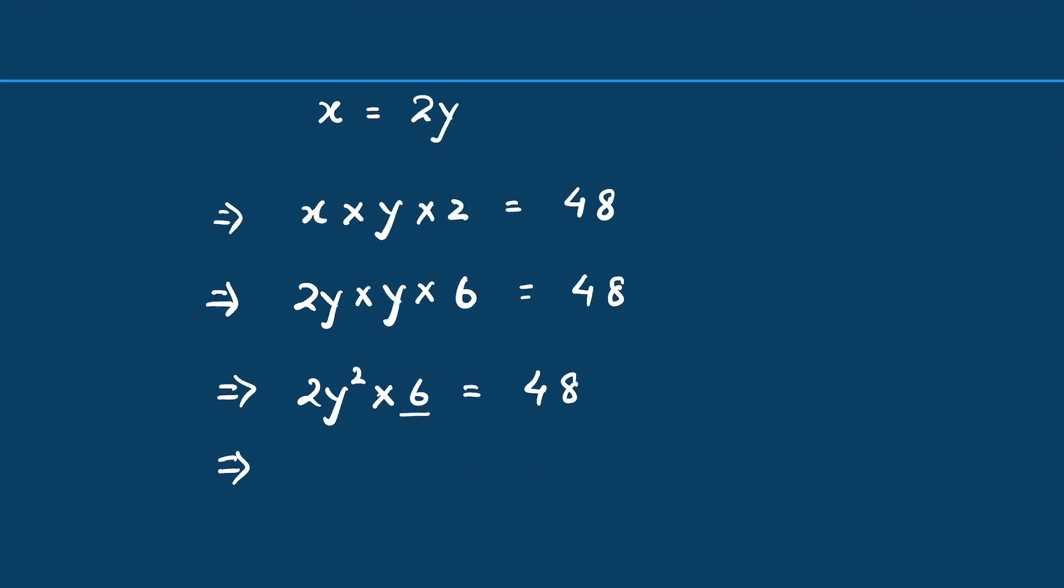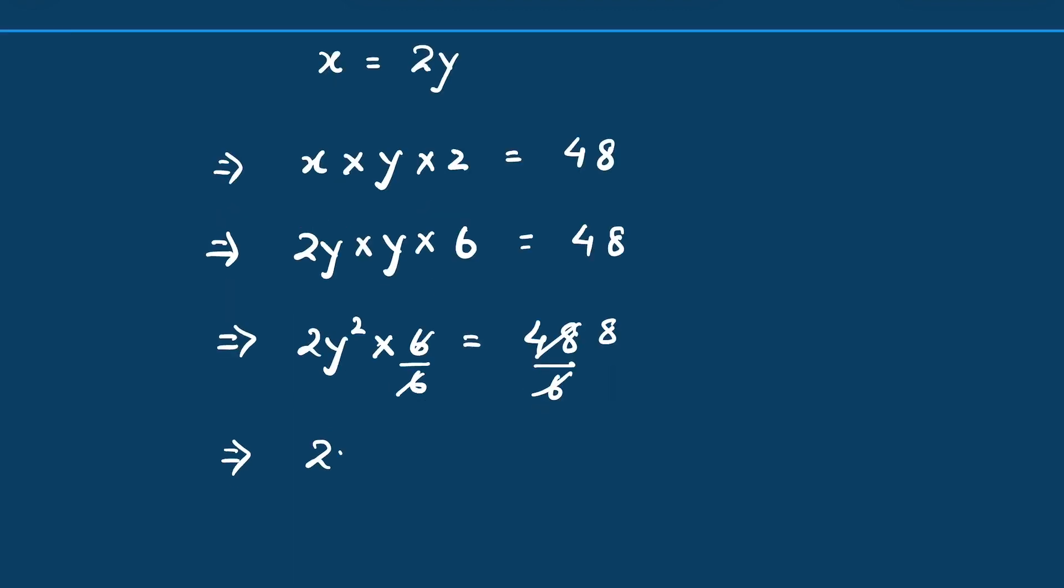dividing both sides by 6. So 6 and 6 cancel, 6 times 8 is 48. 2y² equals 8. Again, remove 2 from this side by dividing both sides by 2. So 2 and 2 cancel, 2 times 4 is 8. Now y² equals 4.